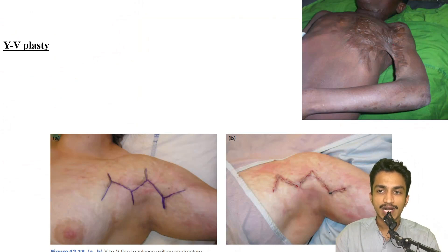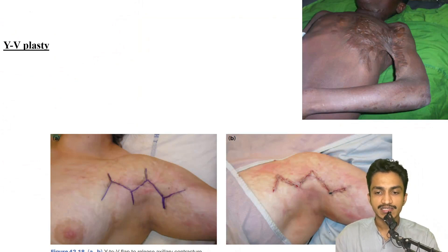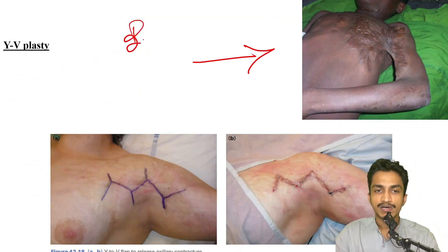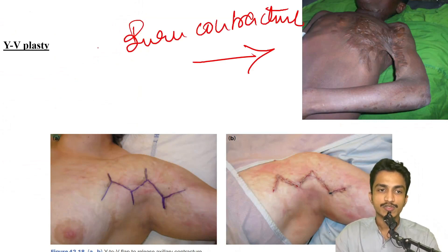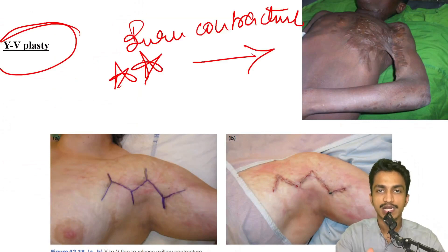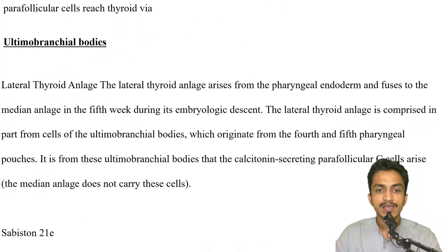Image of a burn scar with burn contracture affecting the axilla and chest: in Bailey's plastic surgery section, for a similar contracture involving the axilla, the treatment shown is YV-plasty. The best treatment for burn contracture of the axilla should be YV-plasty, because we have to extend and prolong that area. No other treatment modality — YV-plasty is the answer.